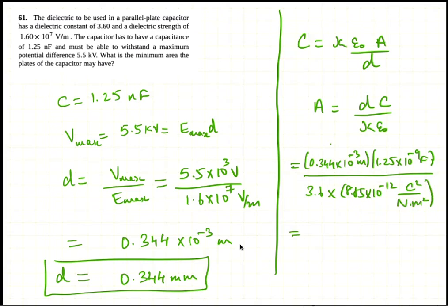So all this works out to, so for the area, the area has to be, the powers of 10 cancel. So the area works out to be 0.344 times 1.25 divided by 3.6 times 8.85 meters squared.